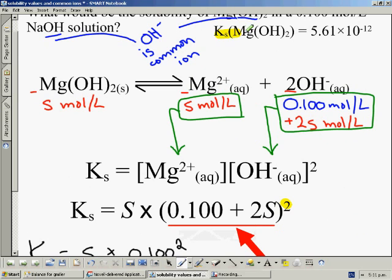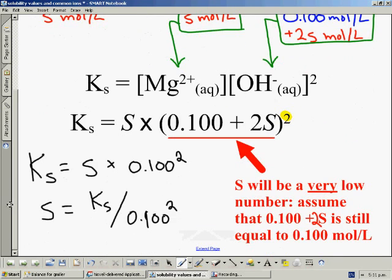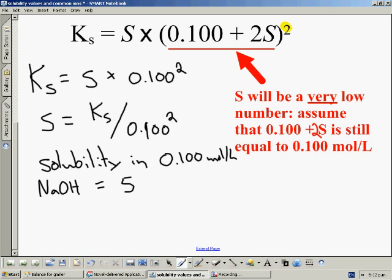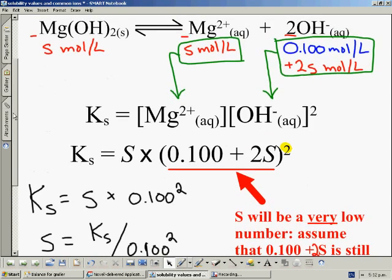The Ks value was supplied, so we just need to take that number and divide it by 0.1 squared. And we should find that the answer we get is going to be the solubility of this salt inside 0.1 mol per liter sodium hydroxide. And just like last time, the answer we end up getting is a very, very low number. The salt will barely dissolve. And this means our assumption is true.